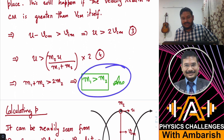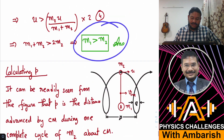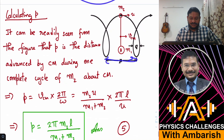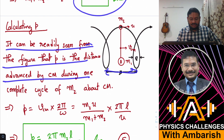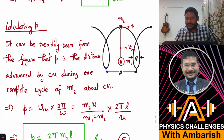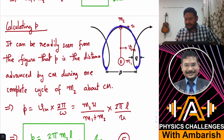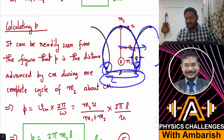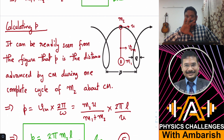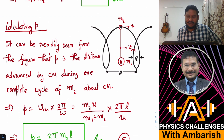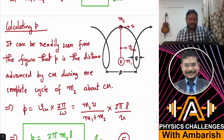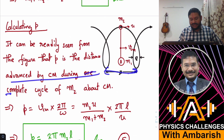That was the first part: which disk is heavier. Now let's calculate the value of p. It can be readily seen from the figure that p is the distance advanced by the center of mass during one complete cycle of m2 about center of mass C. After one complete cycle, the same configuration repeats, so it's the distance moved by A, B, or the center of mass — all advance by the same amount — and a fresh cycle starts.